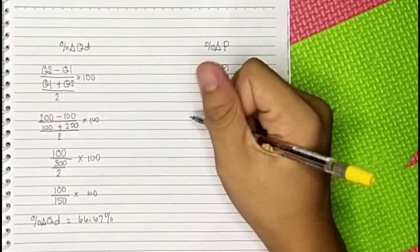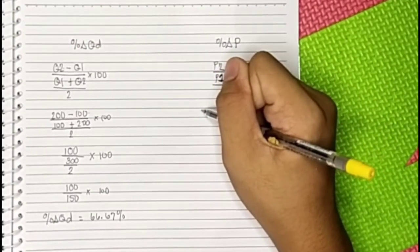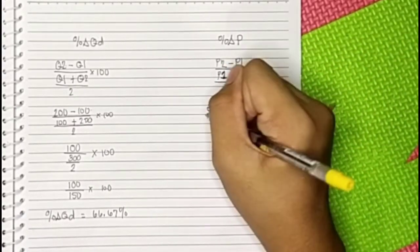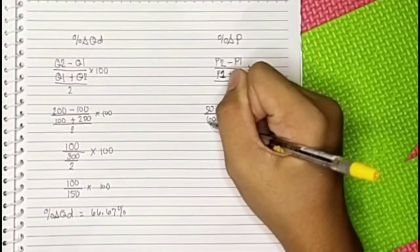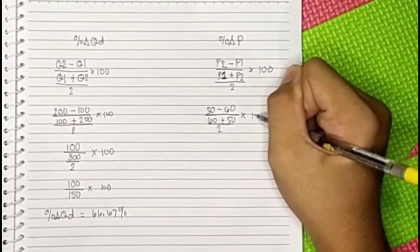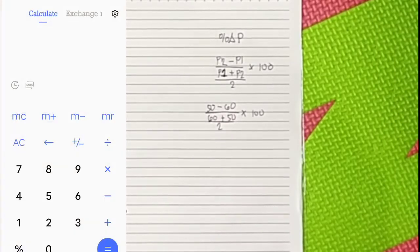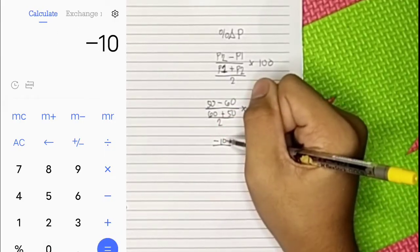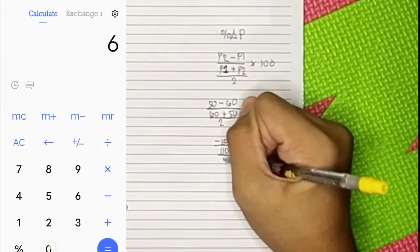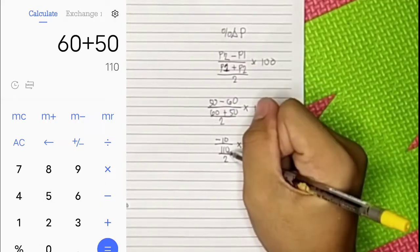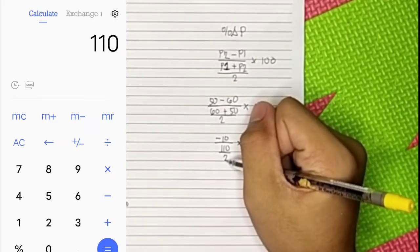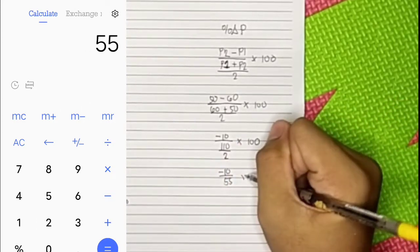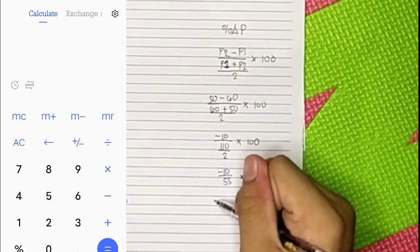Next, let's find the percent change in price. The value of P2 is 50 minus 60, over 60 plus 50 divided by 2, times 100. First, subtract the numerator: 50 minus 60 equals negative 10. Then 60 plus 50 equals 110, divided by 2, times 100. So we have negative 10 over 55, times 100.